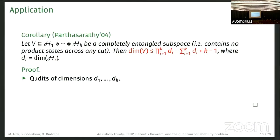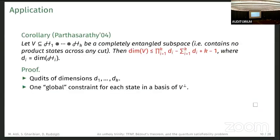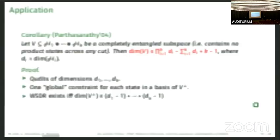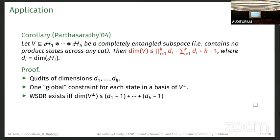This is now super easy to prove. Each qudit represents one of these Hilbert spaces, and the dimension is chosen to be the same as the H_i. We introduce one global constraint for each state in a basis of the orthogonal complement of V.